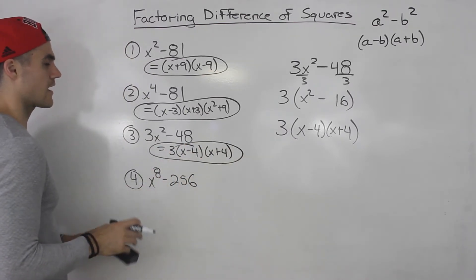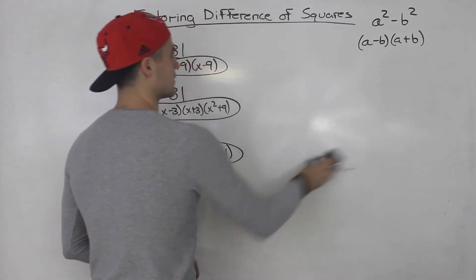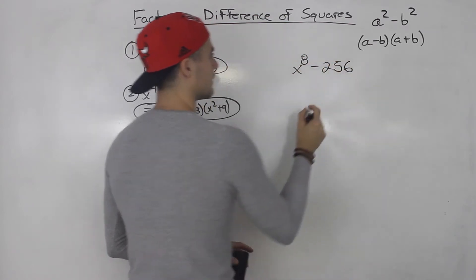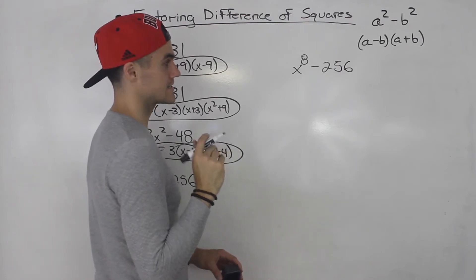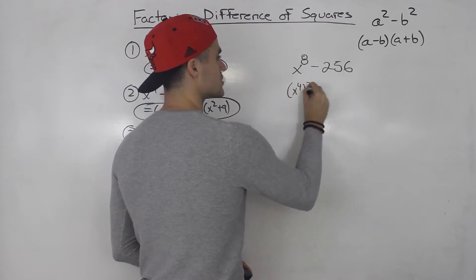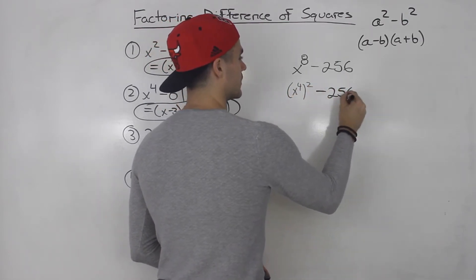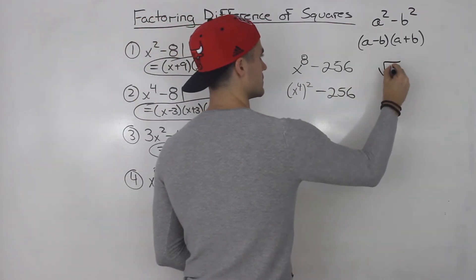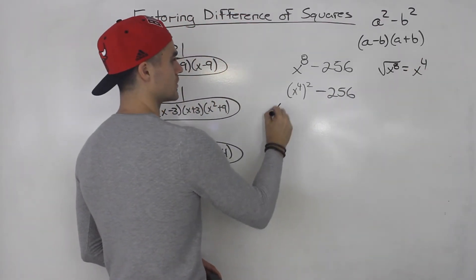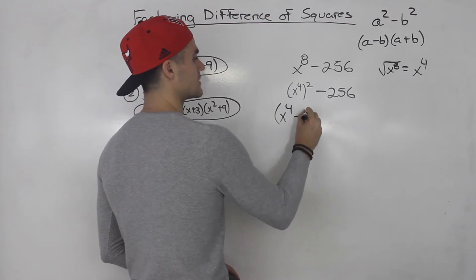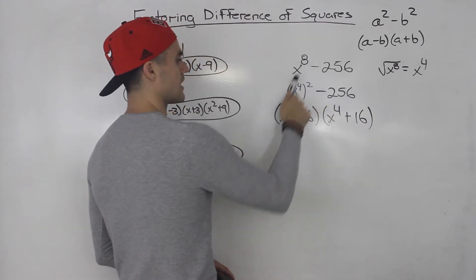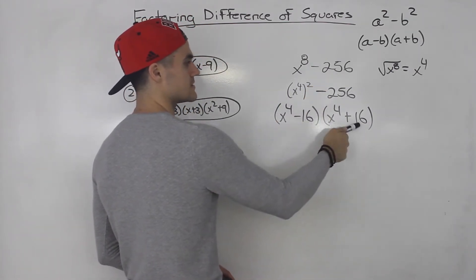Finally, we've got x to the 8 minus 256. The square root of 256 is 16, and x to the power of 8 we can rewrite as x to the power of 4 squared. The square root of x to the 8 is just half of that exponent, so it's x to the 4. So we can rewrite this as x to the 4 minus 16 times x to the 4 plus 16.